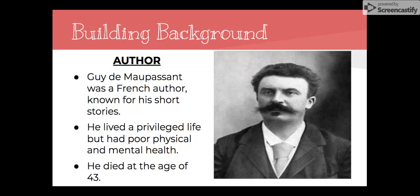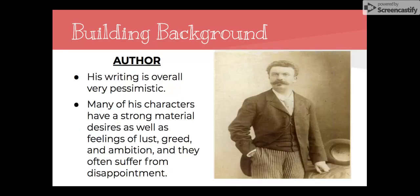Last but not least, our author is Guy de Maupassant. He was a French author known for his short stories. He lived a very privileged life but had poor physical and mental health, and unfortunately died at the age of 43. He is known for being a very pessimistic writer. Many of his characters have a strong material desire, as well as lust, greed, and ambition, and because of that ambition — wanting to move up in social class — they often suffer from disappointment. So keep that in mind when we're reading the story tomorrow.